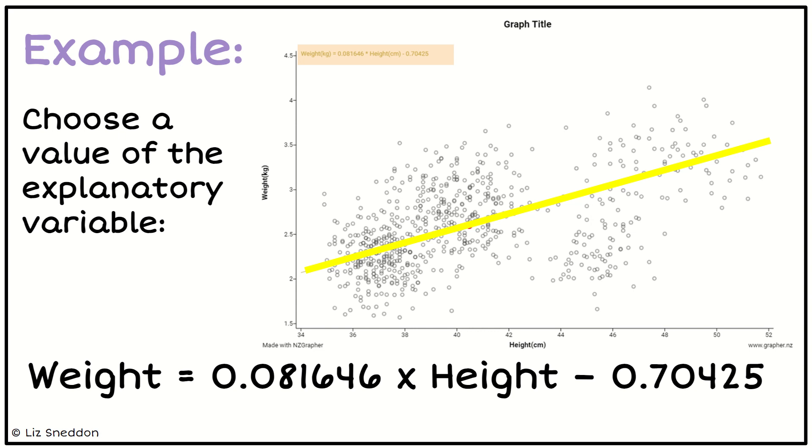So what we need to do now is we need to choose a value of the explanatory variable. On our horizontal axis we've got the heights and the heights go from 34 centimeters up to about 52 centimeters. So we need to choose a value inside that range. I'm just going to go with a nice round number and I'm going to choose 40.